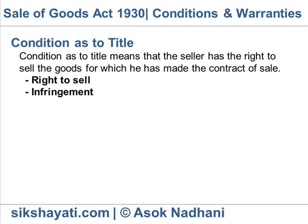Right to sell. In a contract of sale, if there is no different intention as is expressed in the contract, there is an implied condition on the part of the seller that the seller has a right to sell the goods. In case of a sale, the seller has a right to sell the goods, and in case of an agreement to sell, the seller will have a right to sell the goods at the time when the property is to pass.